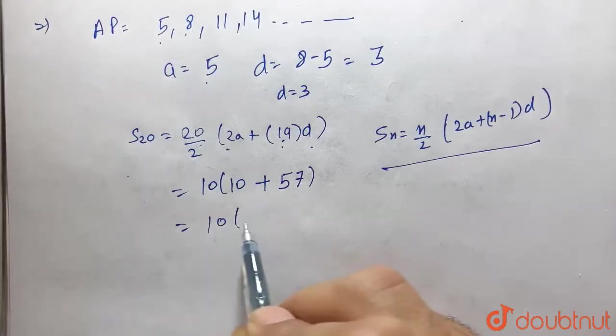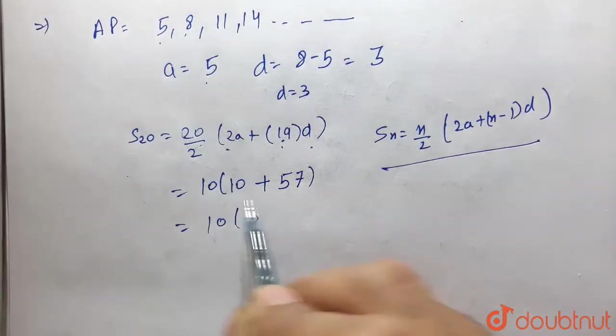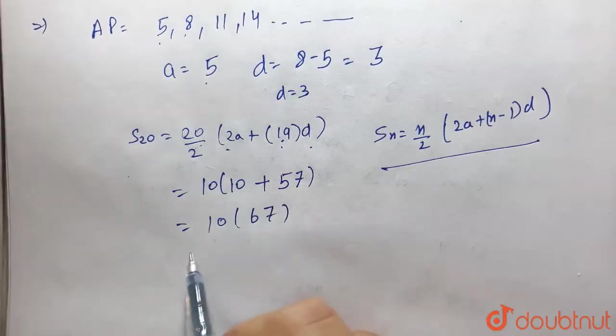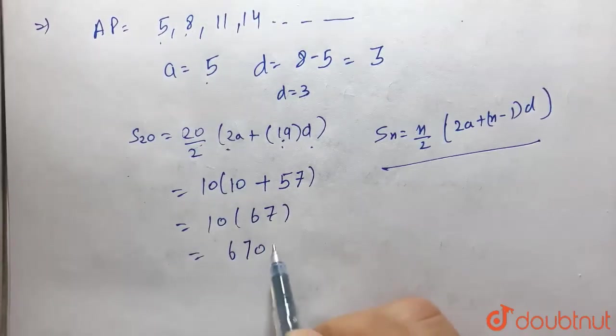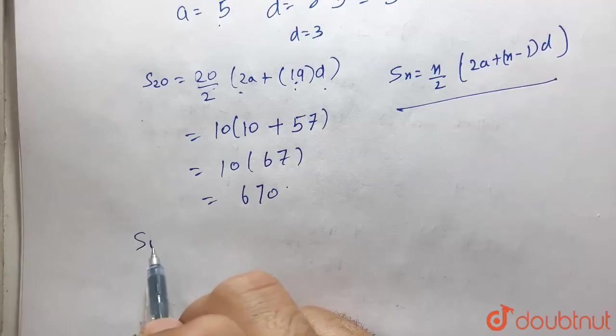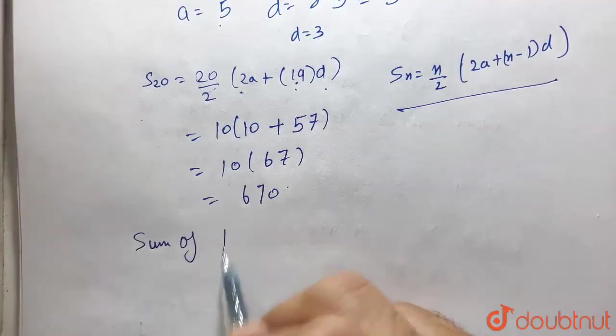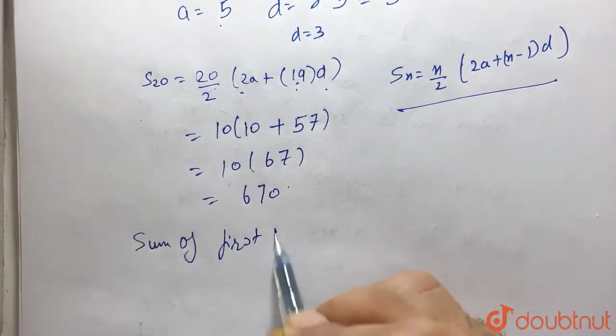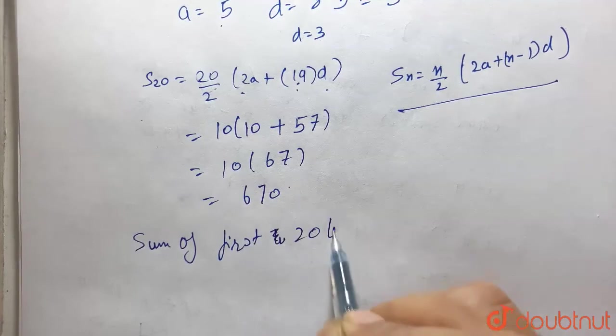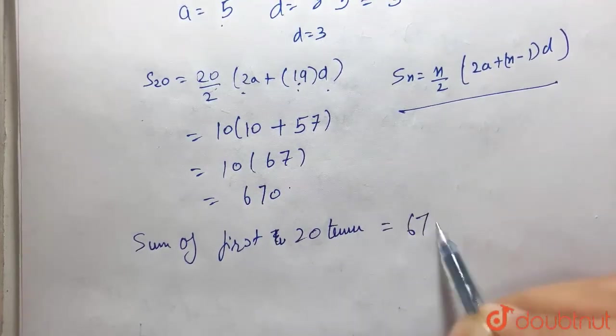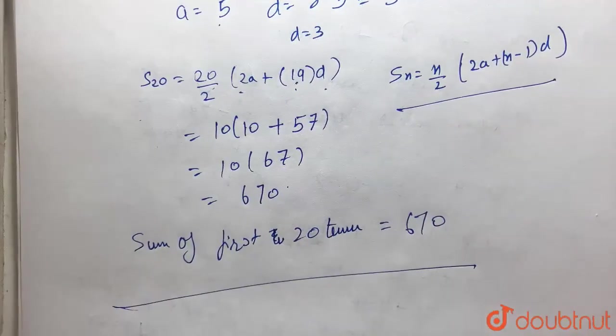This becomes 10 into 10 plus 57, that is 10 into 67, which equals 670. So sum of first 20 terms equals 670, and this is our answer.